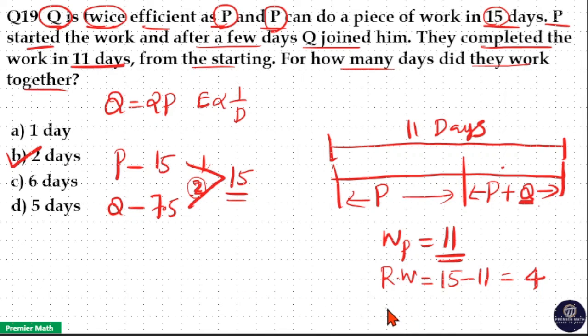Number of days taken by Q equals remaining work is 4 divided by efficiency of Q is 2, which is 2 days.